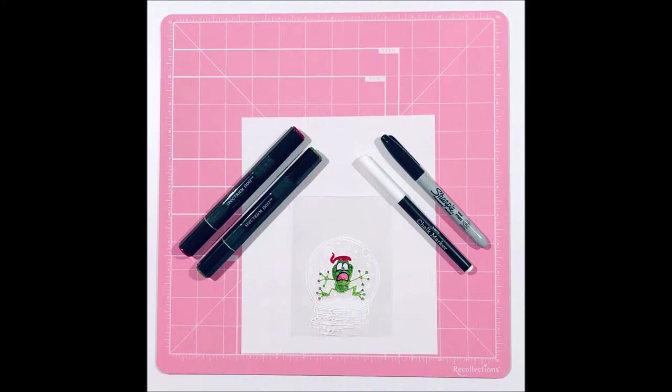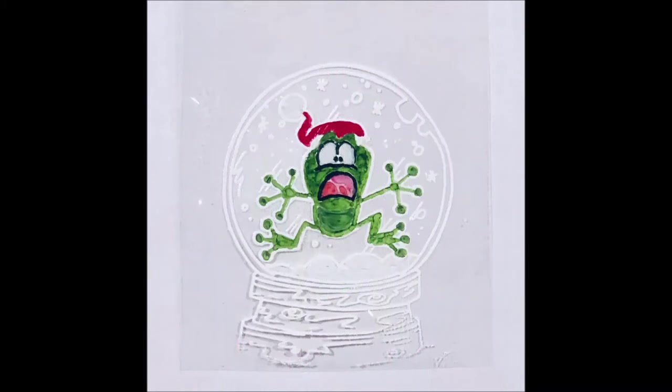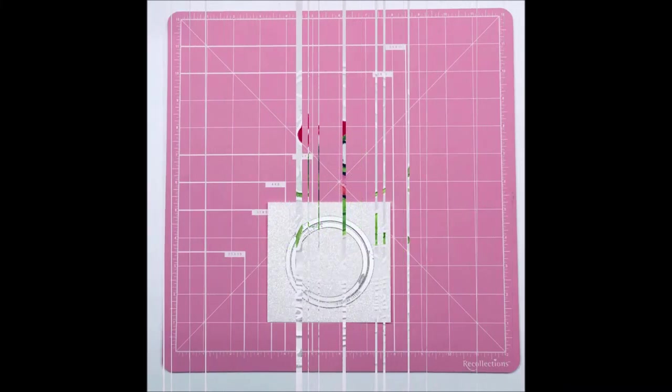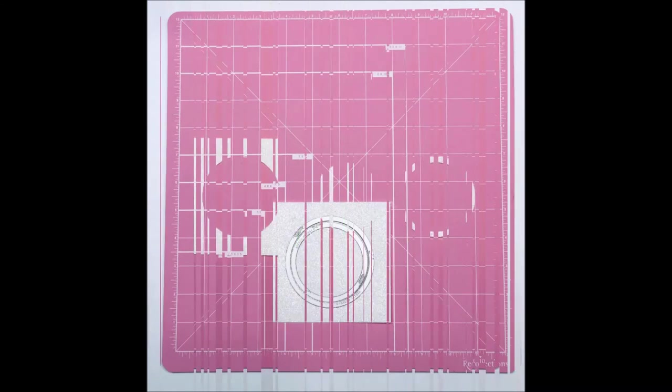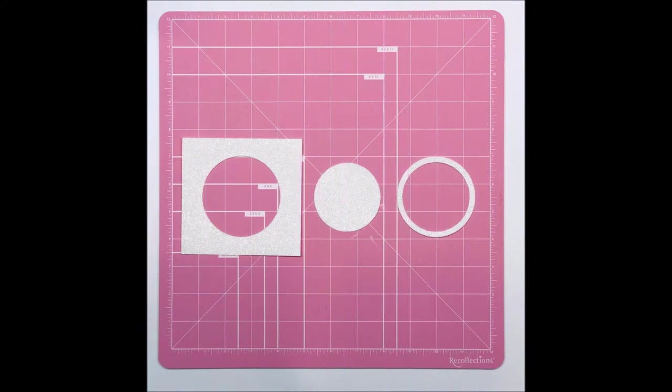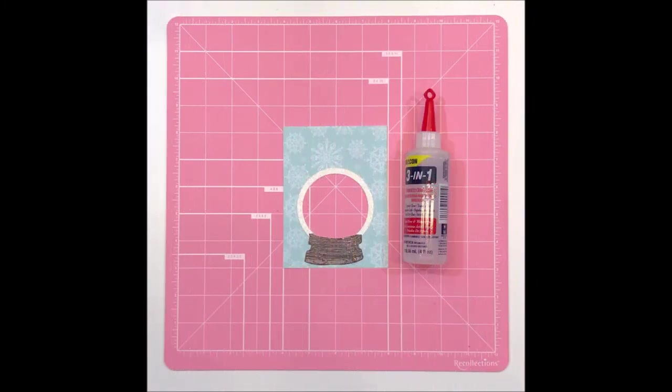When it came time to color, I discovered that alcohol ink doesn't color as smoothly on acetate as I would have thought. But then I decided it was perfect because frogs and toads don't have perfect looking skin anyway. The chalk marker worked great for the things that I needed to color white. Next I decided that I wanted a sparkly white ring around the outside of the snow globe to give it a little dimension. So I used some white glitter paper and a couple circle dies and got exactly what I was looking for and glued that on. Then I glued on the base of the snow globe.